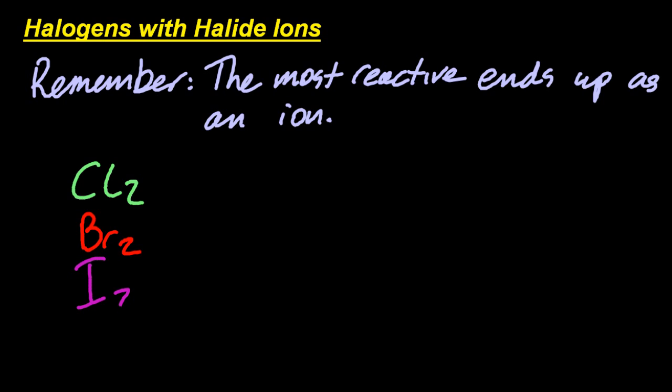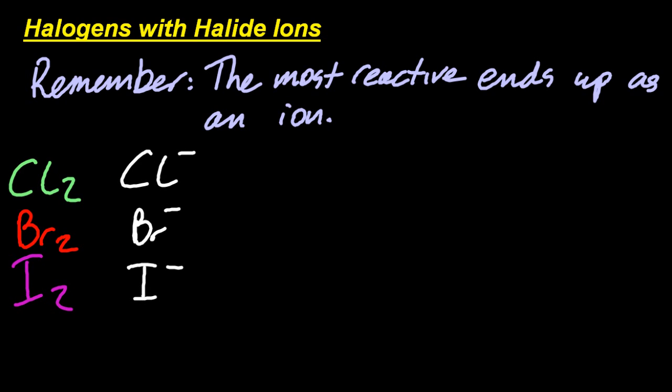You do need to know the colours. Bromine is brown. We saw that. But chlorine's green and iodine's purple. And that the ions, the halide ions, are all colourless. Not white, colourless. But I can't draw in colourless because you couldn't see it.